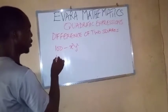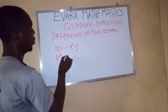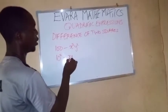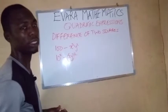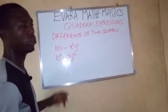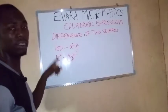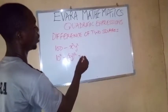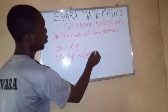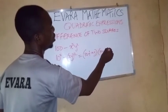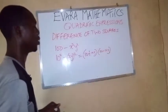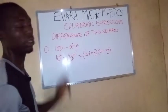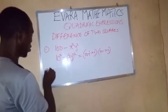So we are going to express 100 as 10 squared minus. This x squared y squared, we can as well write it as x, y, all squared. So if you compare this with the rule, we will now factorize that this 10 is standing as the a and this xy is standing as the b. So to factorize this, it will be 10 plus xy, 10 minus xy. So with this, we have factorized this expression.